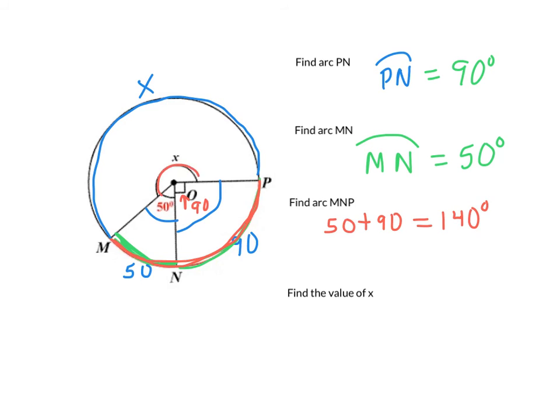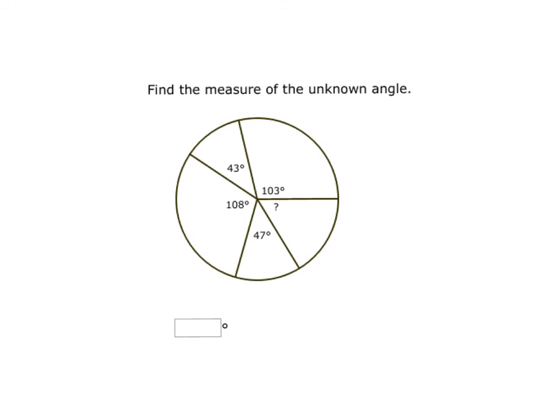And then finally, they want us to find the value of X. So we're going to use the property, once again, that we have 360 degrees all the way around the circle. We're going to minus out 90. We're going to minus out 50. If you just grab your calculator or do that in your head, you should get an answer that X equals 220 degrees. Let's look at another one. This will be our last one.